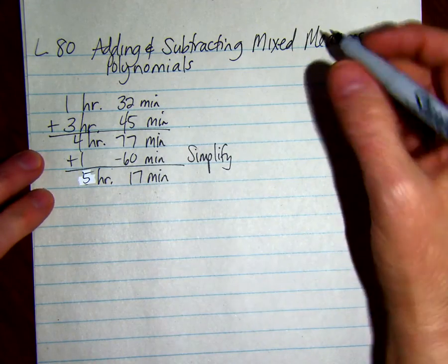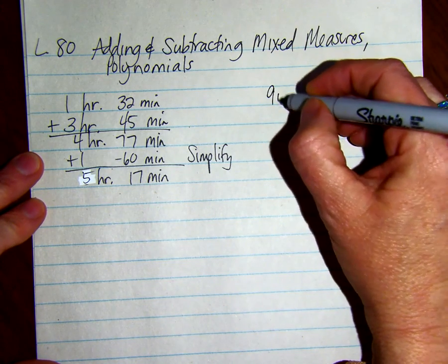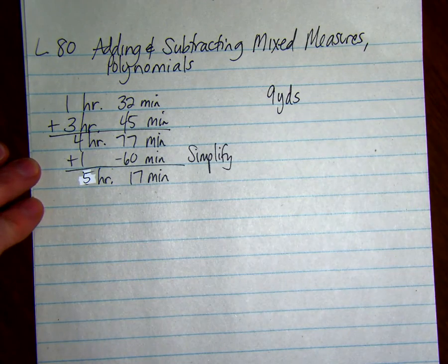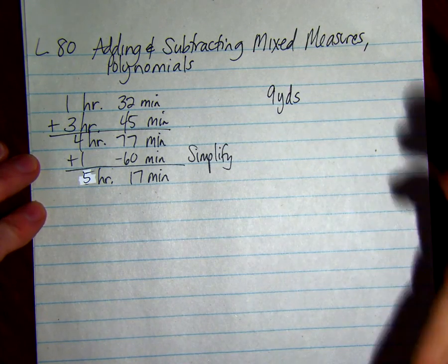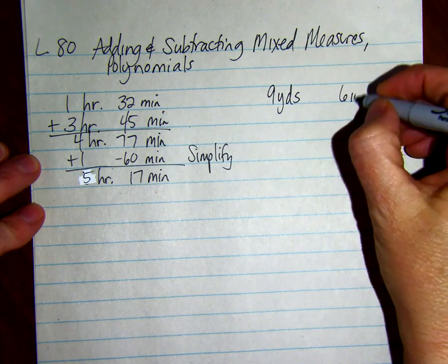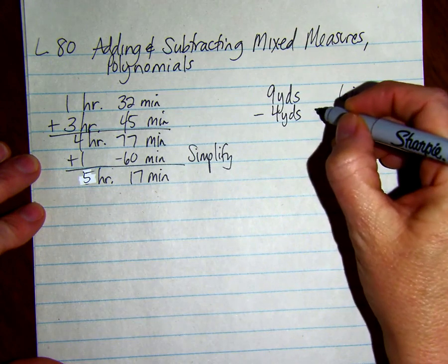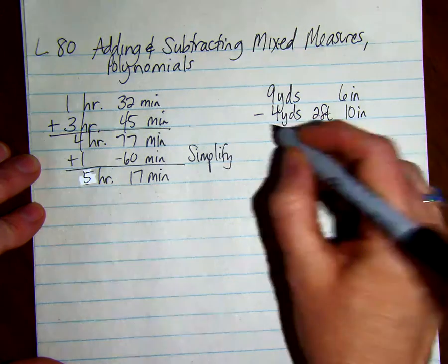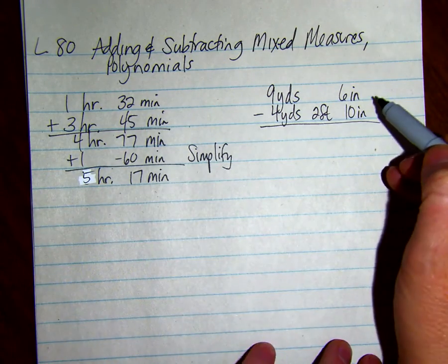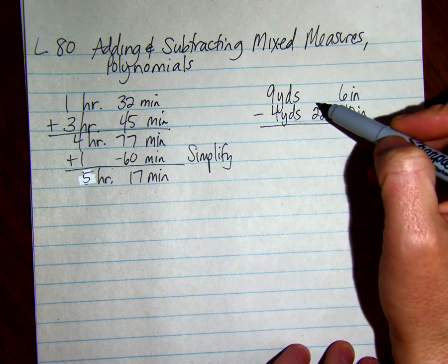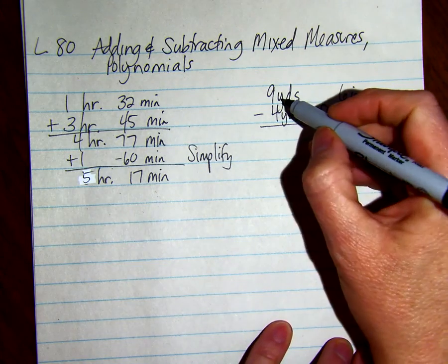Now if we're subtracting, sometimes we have to borrow from the next one over. Here's an example: 9 yards 6 inches minus 4 yards 2 feet 10 inches. So 6 inches is smaller than 10 inches, so we have to borrow from the feet. There's no feet here, so let's borrow from the yards.